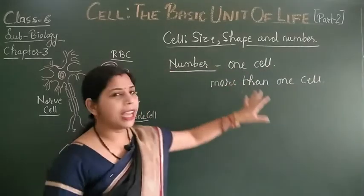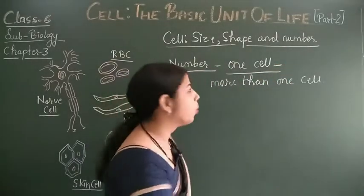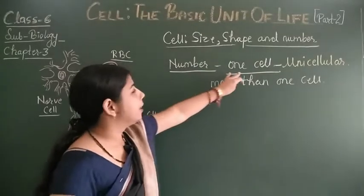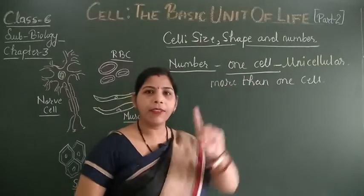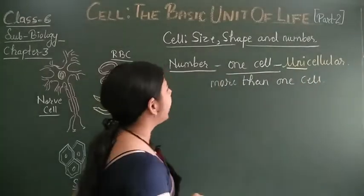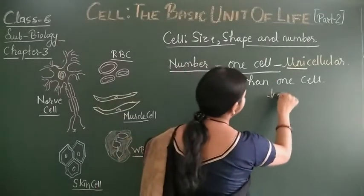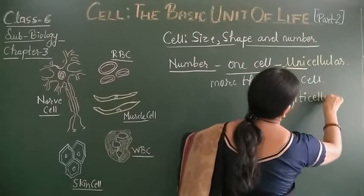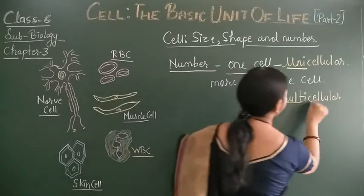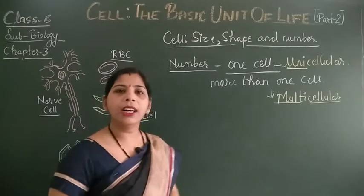The living organism can be made up of one cell only. The organism which is made up of one cell only is known as unicellular. For example, amoeba is a unicellular organism.